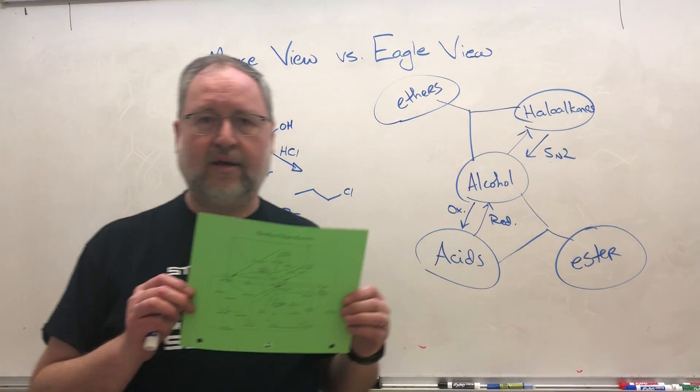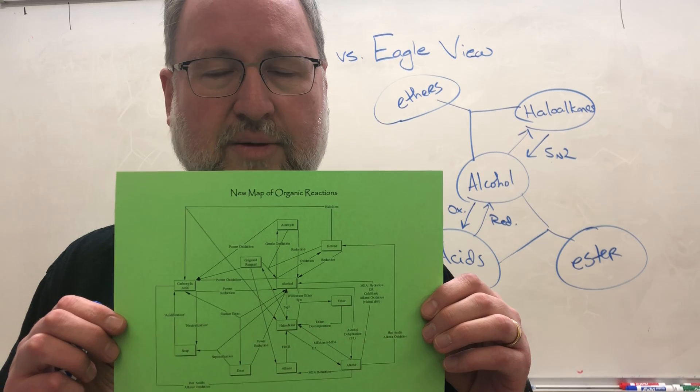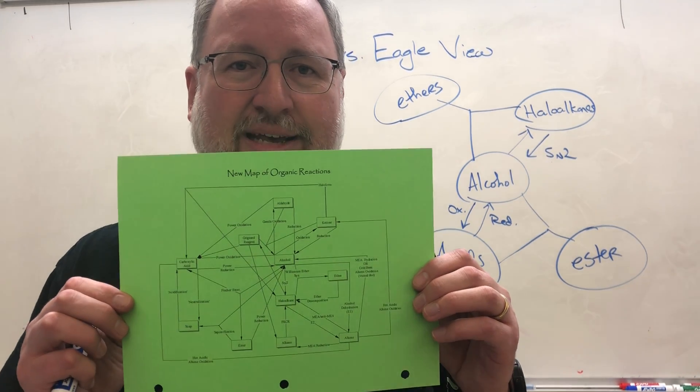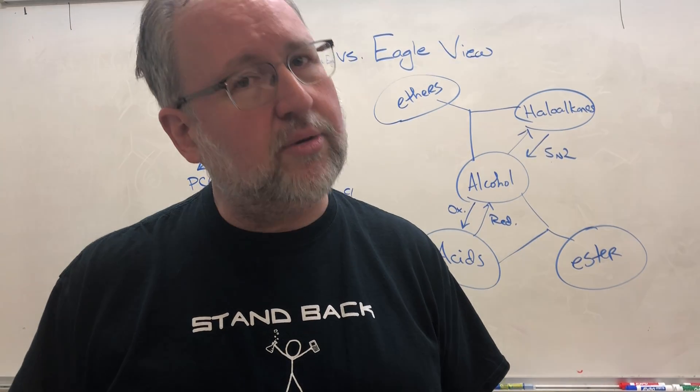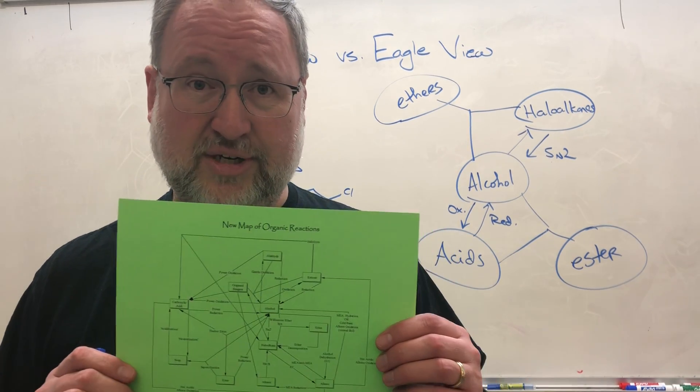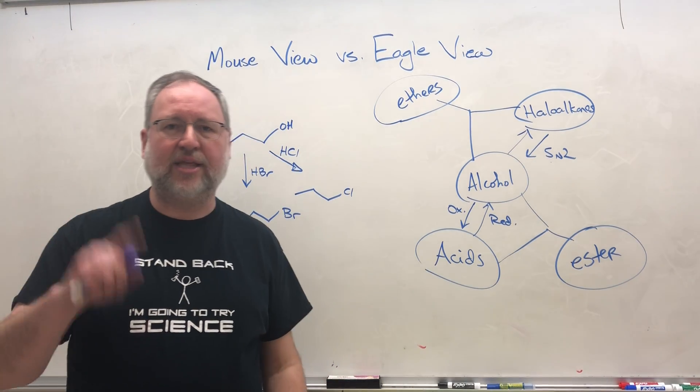I have made myself in about five minutes a little map of reactions. I'm actually not very proud of this one, I just dashed it off super quick. You can find it on the PowerSchool. I would encourage all of you to make your own version. I'm pretty sure that your version will be better than this version. So if you're mostly in mouse view, I want you to think more like an eagle.